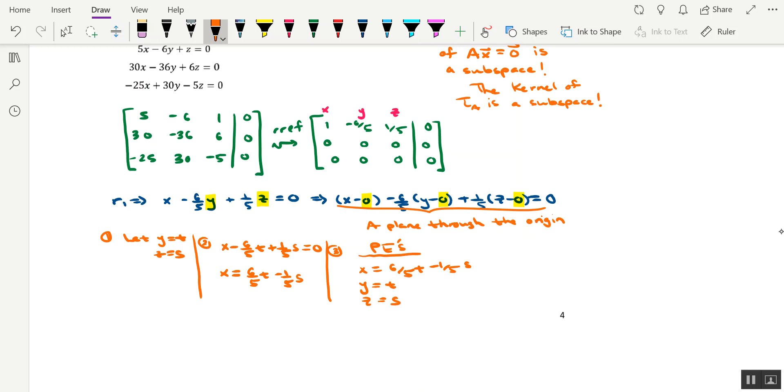Okay, so the fact that these parametric equations involve two different parameters should lead you to conclude that this is a plane. How would you know that it's a plane through the origin, though? Well, you could write each one of these parametric equations involving the origin. We could write the first equation as 0 plus 6 fifths t minus 1 fifth s. The second equation as 0 plus t. And then the third equation as 0 plus s. And so, these would be the components of the vector that's involved when you write the parametric equation version of the plane through the origin.